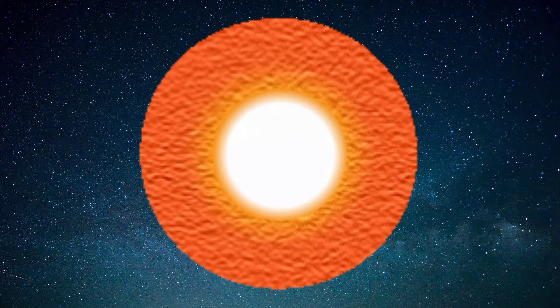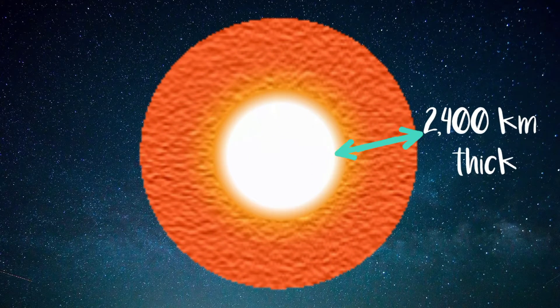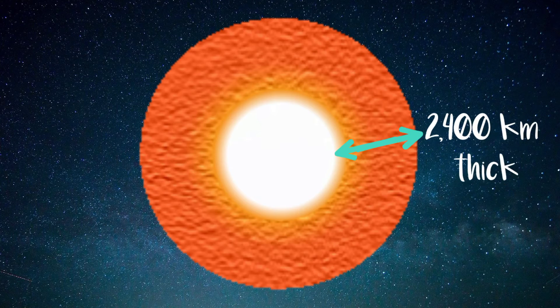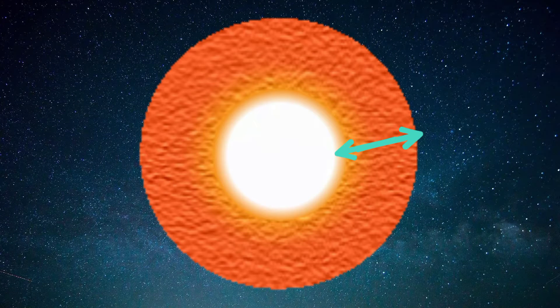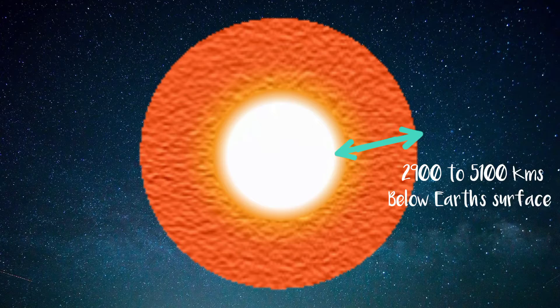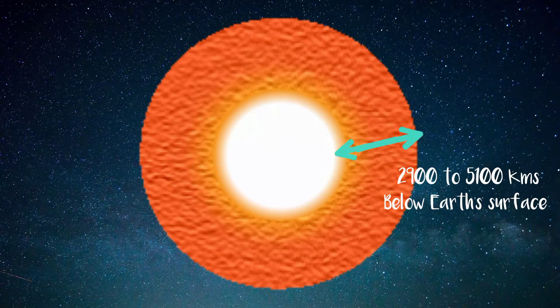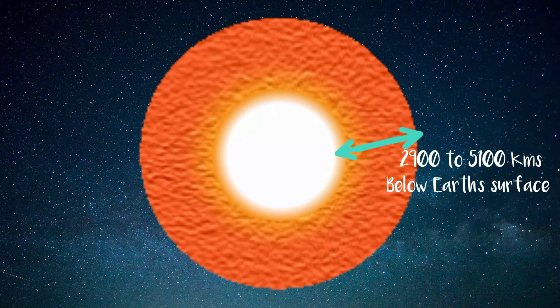Earth's outer core is a fluid layer about 2,400 kilometers thick that lies above Earth's solid inner core and below its mantle between 2,900 to 5,100 kilometers.